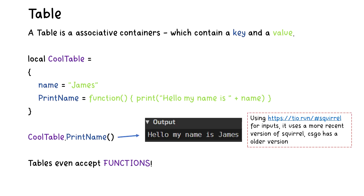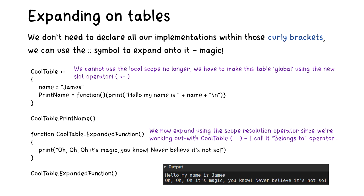First we have to know what a table is. A table is an associative container which contains a key and a value. For this example, we have a table called cool_table with a key 'name' with value 'James', and a key 'print_name' which references a function that prints the name. When we call cool_table.print_name, notice it prints out the name. The cool thing about Squirrel is that it allows you to assign functions, which is very handy. Squirrel also allows us to expand our tables — we can create another function within the table called expanded_function without declaring it in the initial cool_table definition. Notice that we have to use the new slot operator, and we cannot do this on local tables.